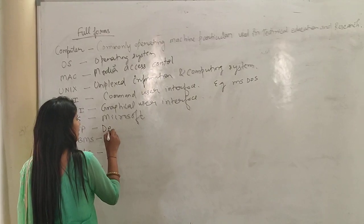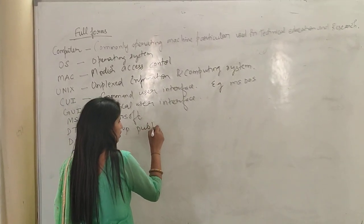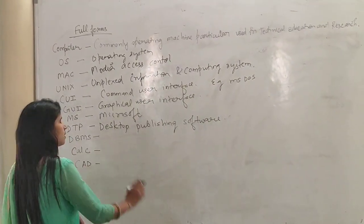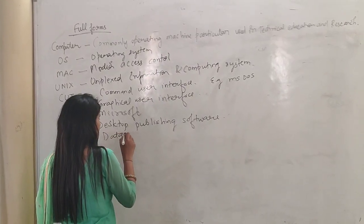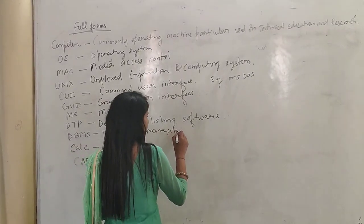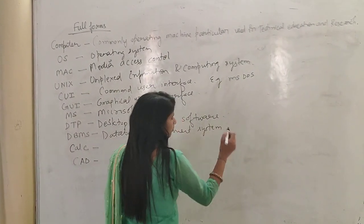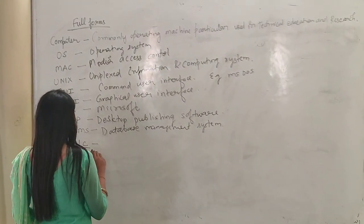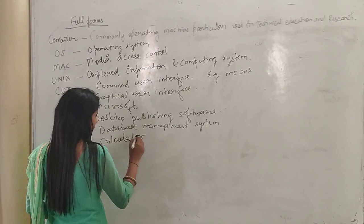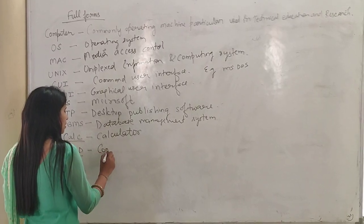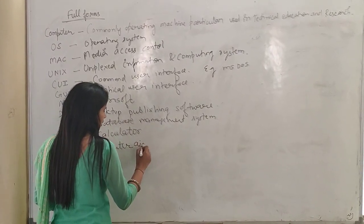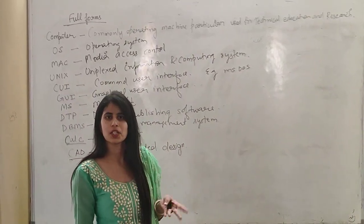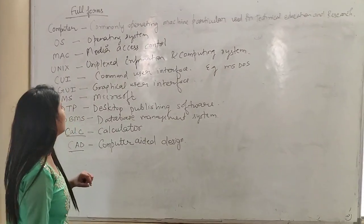DTP is a kind of software; it stands for Desktop Publishing Software. Next is DBMS — DBMS stands for Database Management System. DBMS software is database management software. CALC is a kind of software; its full form is Calculator. The next one is CAD — it stands for Computer Aided Design. These are the basic full forms related to the chapters we had studied.